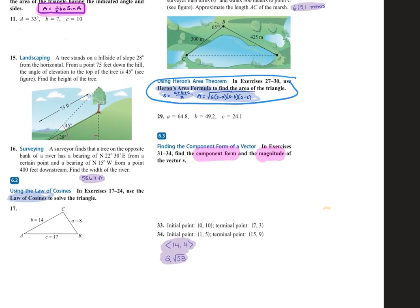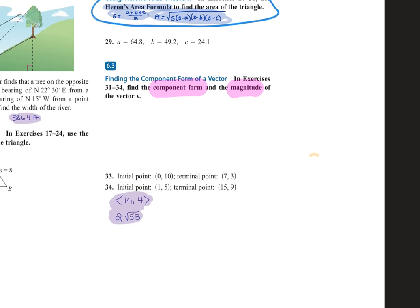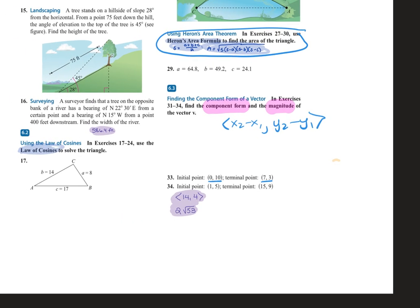In section 6-3, we got into vectors and component form. This is your X2 minus X1, Y2 minus Y1, where your initial point uses the 1's and your terminal point uses the 2's, and you leave it in component form. The magnitude is the square root of (X2 minus X1) squared plus (Y2 minus Y1) squared. Or if you already have the component form, it's the square root of A squared plus B squared.